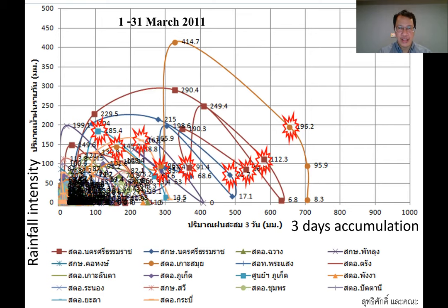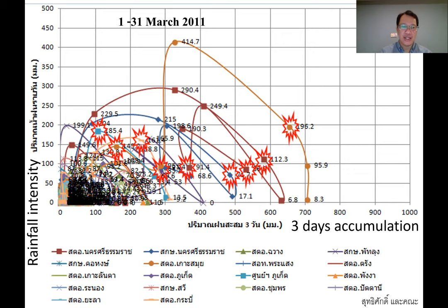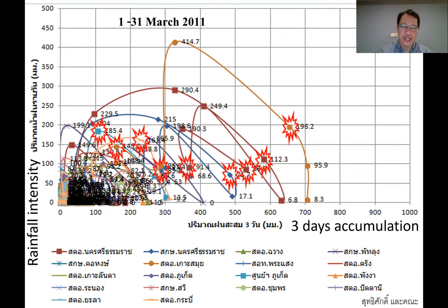How do we get the threshold? If we have records of rainfall and landslide events, what we can do is plot something like this. We plot the information of rainfall accumulation. In each country, the pattern of rainfall may not be the same.